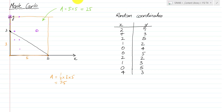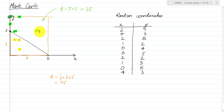You can see our coordinates, and I can see that 1, 2, 3 of those randomised coordinates are in the triangle, which means 7 of them — 1, 2, 3, 4, 5, 6, 7 — are outside of our triangle.